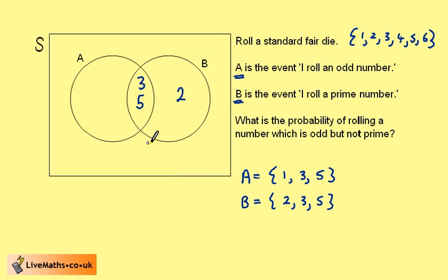2 must go in here, and 1 in here. The 4 and the 6 are neither in A nor B, but they are in S, so they go in this outside area.